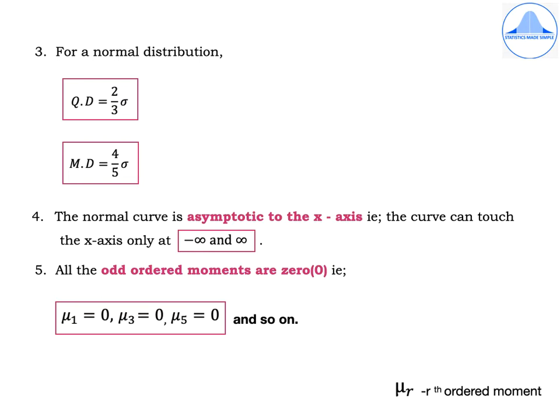Property 5: All odd ordered moments are 0. Odd numbers are 1, 3, 5, 7, 9 and so on. Therefore mu1 equals 0, mu3 equals 0, mu5 equals 0, and so on. The third property can be asked as a 2-marker; the fourth and fifth properties can be asked as 1-mark questions.